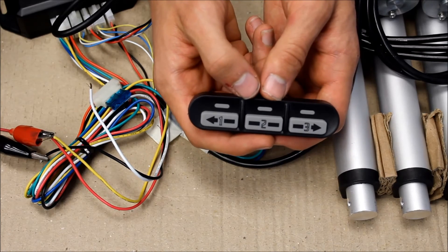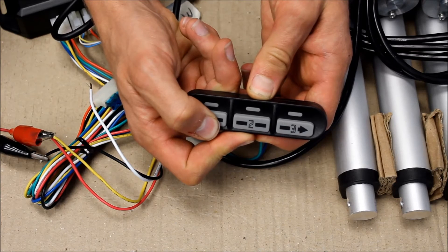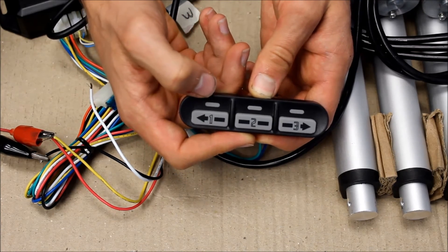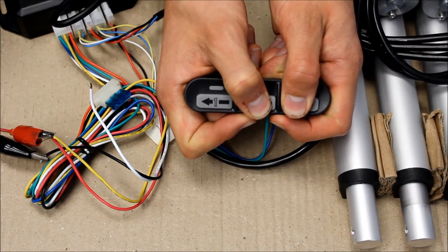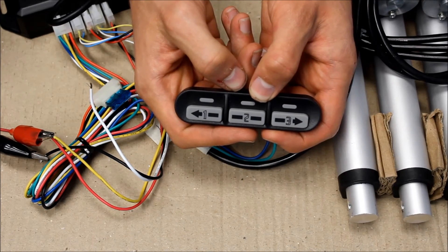Once the actuators are in a position that you want, press and hold one of the buttons until the light flashes. It takes about five seconds. That will store the position in memory. Now, if you move the actuators and then push the button, it will return to the stored position.